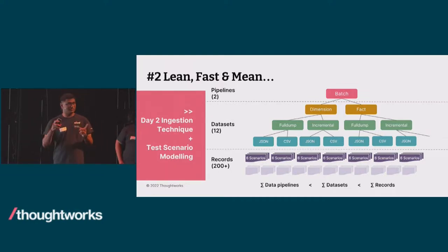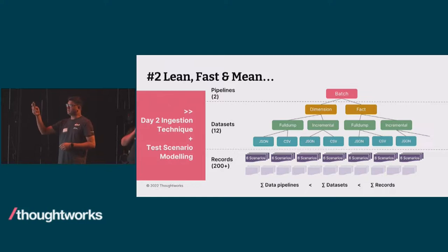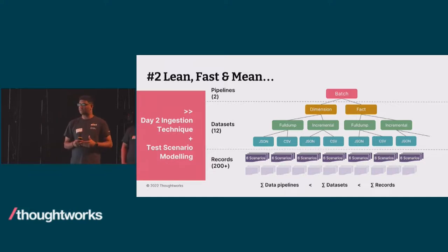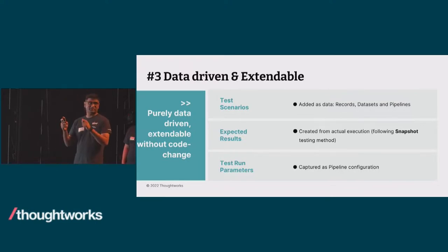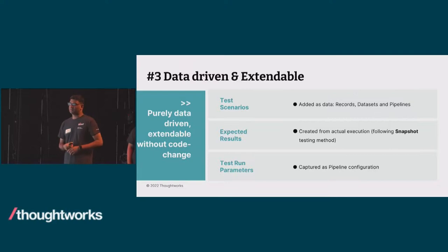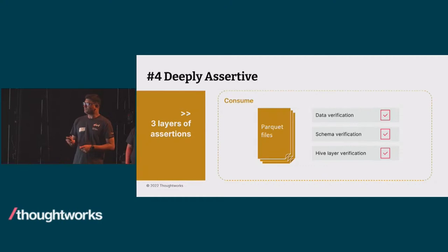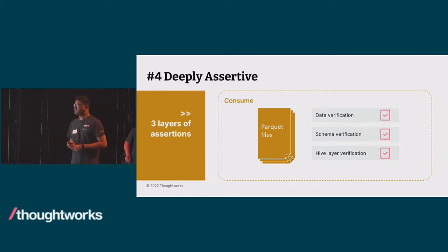We were also able to model our test scenarios — the use cases from manual regression — matching them to multiple pipelines, different datasets, and a number of scenarios. For data-driven and extendable: we can add data in terms of records, datasets, and pipelines. Expected results are derived from the actual day one and day two executions, and everything including pipeline configuration is captured as data. For deeply assertive: assertions operate at three layers — data verification, schema assertion, and high-layer verification including Parquet files.